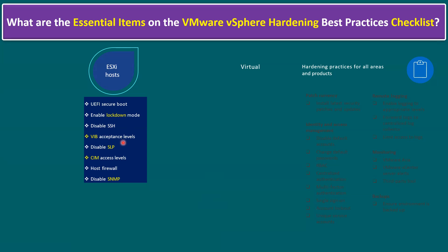And VIB acceptable levels — here VIB means vSphere Install Bundles. And disable SLP, where SLP means Service Location Protocol. It is a network service protocol that enables network devices to discover and locate services on the network. The recommendation from VMware is to disable SLP.